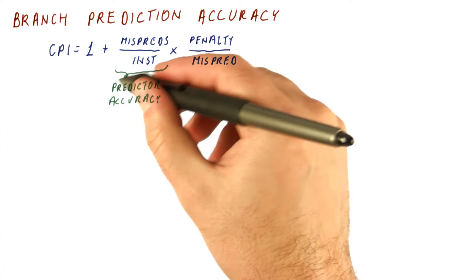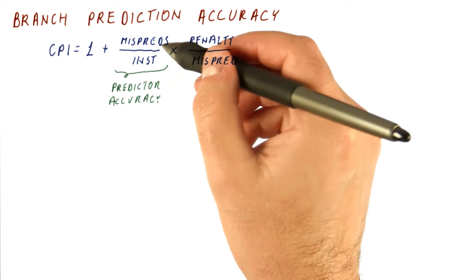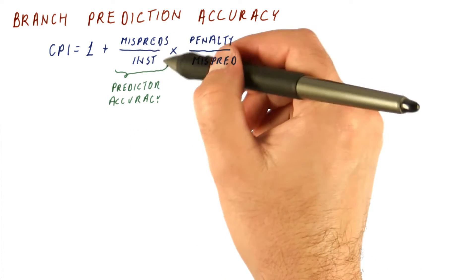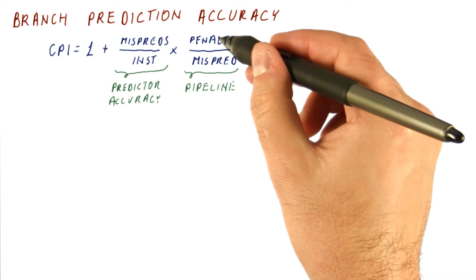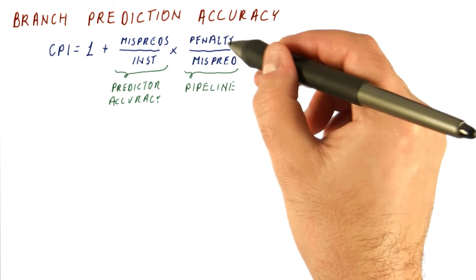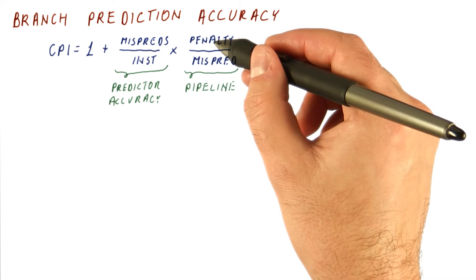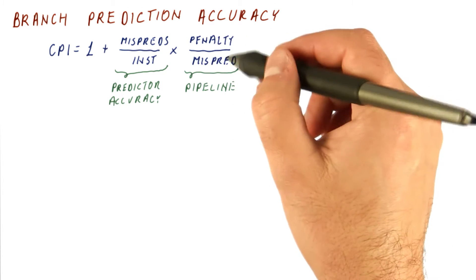Note that this part is determined by predictor accuracy. It really says how often do we mispredict. This part is determined by our pipeline. Where in the pipeline we figure out that we have mispredicted, that's approximately how many cycles we pay.